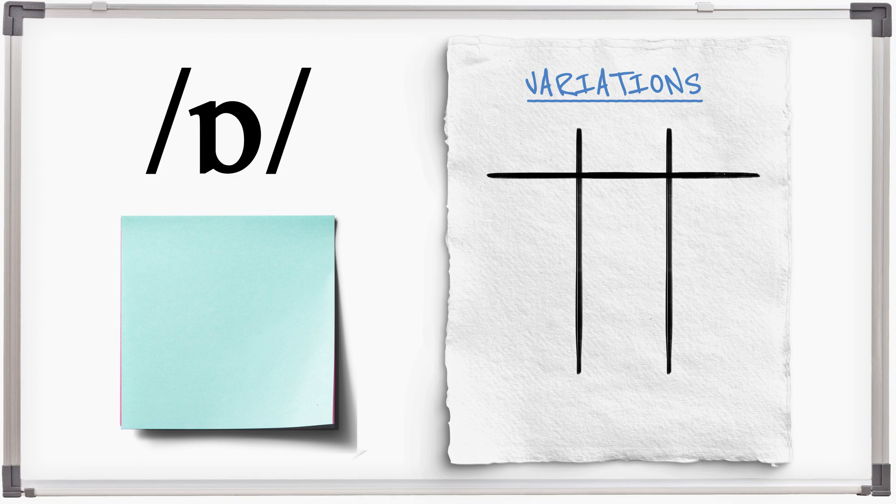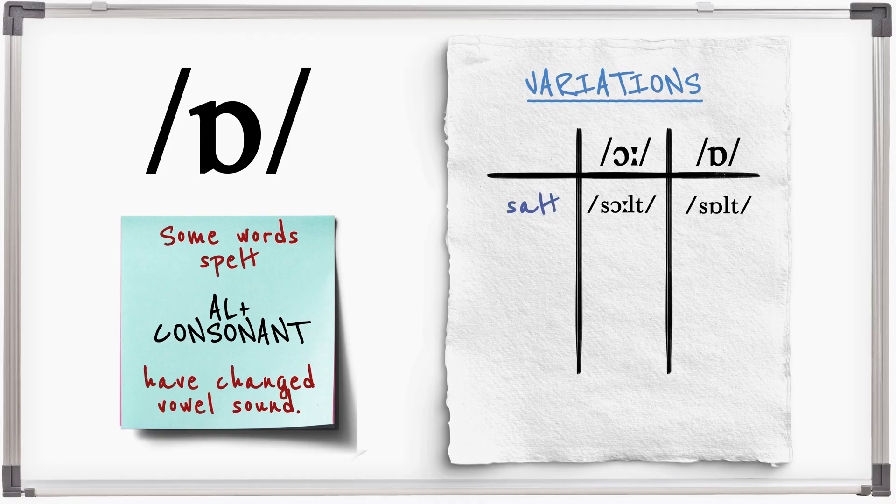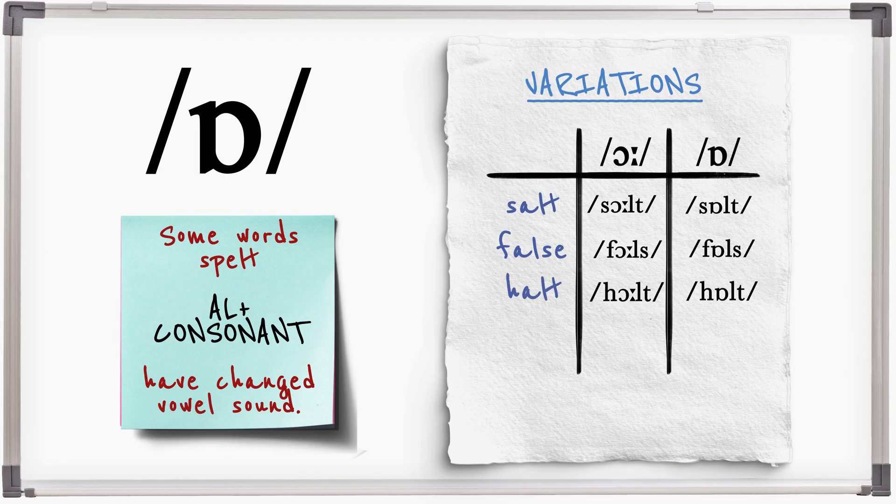Many words spelt with AL followed by another consonant have changed from OR to O for a lot of speakers. Salt, salt. False, false. Halt, halt. Alter, alter.